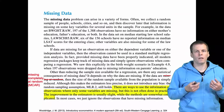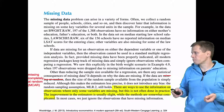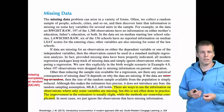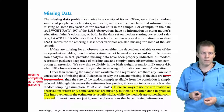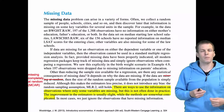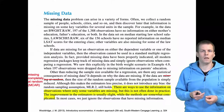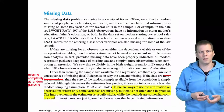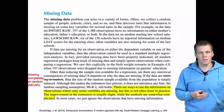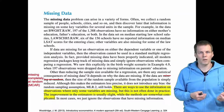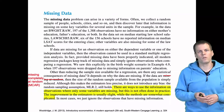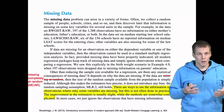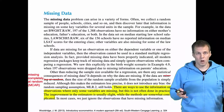Woolridge takes a rather negative view on missing data techniques. He says the advantages of modern techniques can be small and they can be complicated to apply. This is in a way true but also in a way false. If you have lots of missing data, the efficiency gains under missing completely at random can be non-trivial. For example, if you end up dropping half of your data because of missingness, you probably should be using modern missing data techniques.